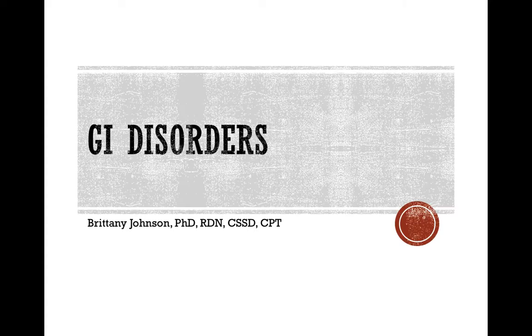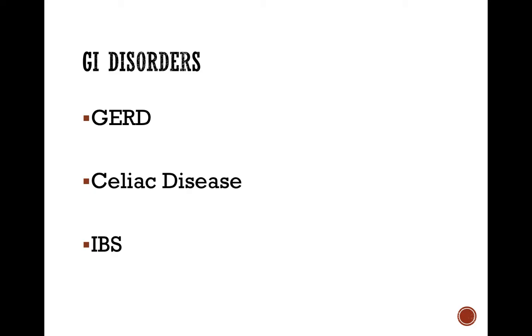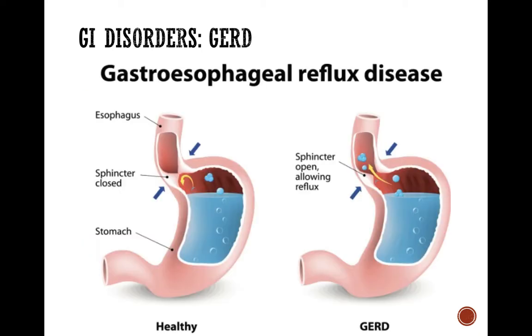Hi everyone, this is going to be a quick mini lecture on GI disorders. We're going to briefly review GERD, celiac disease, and IBS. GERD is gastroesophageal reflux disease — essentially what is happening here is chronic heartburn or acid reflux.